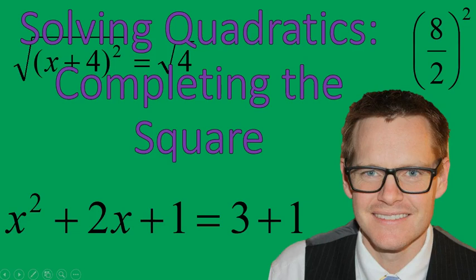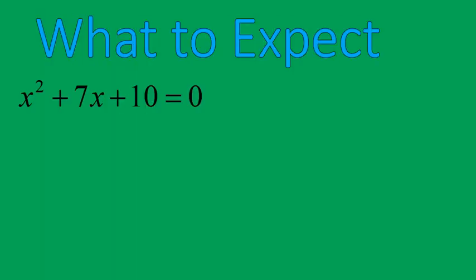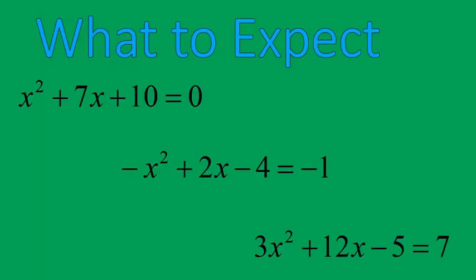Hello, this is Mr. Buffington, and we are going to be solving quadratic equations through completing the square. We will look at these three equations and solve them following the same basic steps, just to show you that you can solve when you have no coefficient of x squared, when you have a negative x squared, or if you have a coefficient like 3 in front of x squared. The steps are very similar each time.